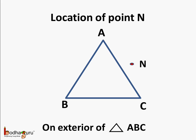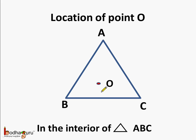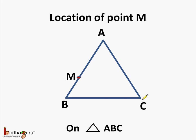Now that we know the different regions, we can find the location of any point easily. The location of point N is exterior to triangle ABC as it lies on the outside of the triangle. Point O lies in the interior of triangle ABC as it is in the interior region. Point M lies on the boundary of triangle ABC, or we can say it lies on triangle ABC.